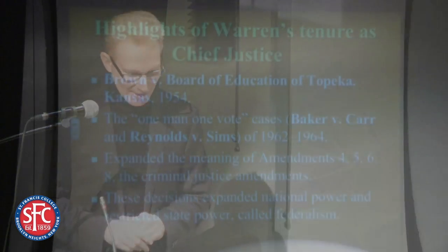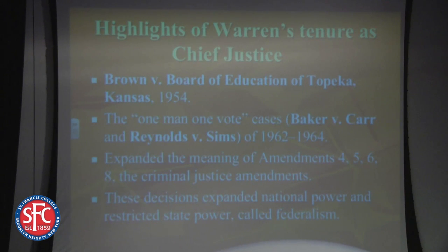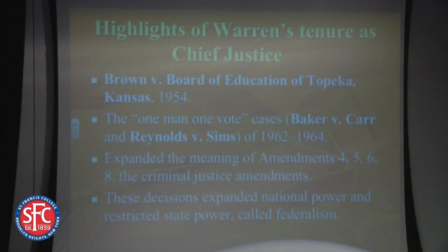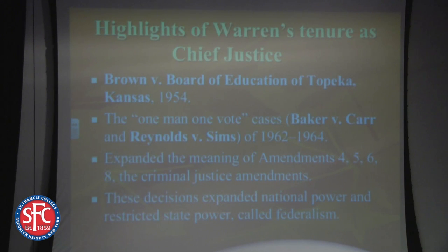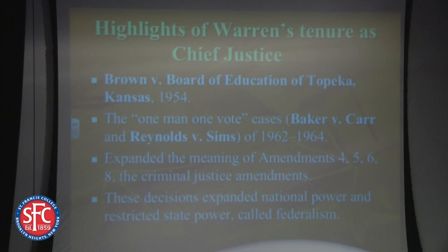Other major achievements of Earl Warren's tenure: prior to Baker v. Carr and Reynolds v. Sims, all electoral districts were completely haphazardly drawn — some had 500,000 people, some had 200,000. When you have that, power shifts to smaller districts. In 1962, '63, and 1964, Warren cleaned all of that up and mandated that all electoral districts give one man one vote. He mandated that all districts in the United States are roughly equal, and so that's what they are today.